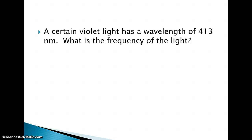So let's try a problem. It says a certain violet light has a wavelength of 413 nanometers. And that's typically how you're going to see wavelength given to you, is in nanometers. What is the frequency of the light? There's our equation that we need to use. And so I just went ahead, I didn't solve for the variable that I was missing, but I just went ahead and plugged in the numbers that I knew.